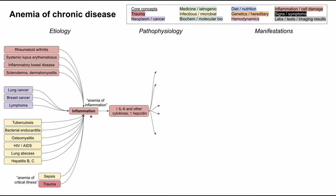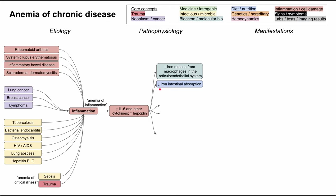The downstream effects of inflammation, high IL-6, and high hepcidin involve three pathways that all converge on anemia. Starting with the first: inflammation causes decreased iron release from macrophages in the reticuloendothelial system — one of the effects of high hepcidin — and also decreased iron absorption in the intestines. Because less iron is released and absorbed, systemic iron levels will be low, leading to decreased heme synthesis, meaning decreased binding of iron to protoporphyrin. This is the last step in making hemoglobin, and without iron, you cannot synthesize heme molecules.